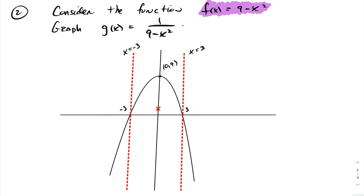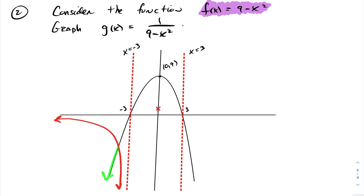Analyzing the left portion: the original function is increasing on that interval, so the reciprocal function will be decreasing. The function approaches 0 from below, so the reciprocal function approaches negative infinity. As f(x) tends towards negative infinity, the reciprocal function tends towards 0 from below the x-axis, since f(x) is also negative there.